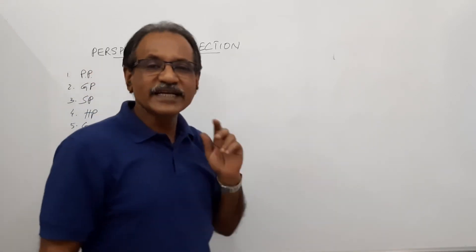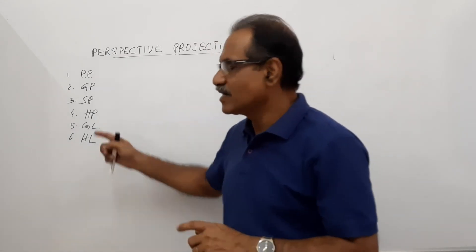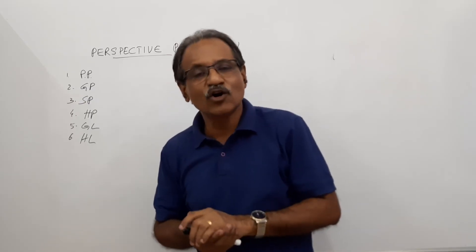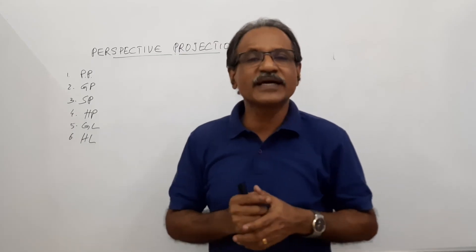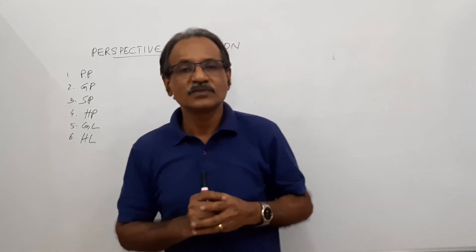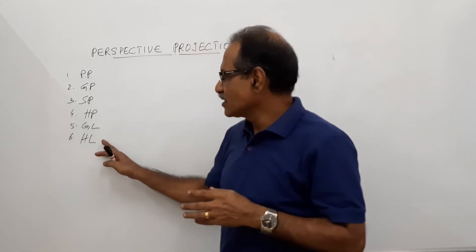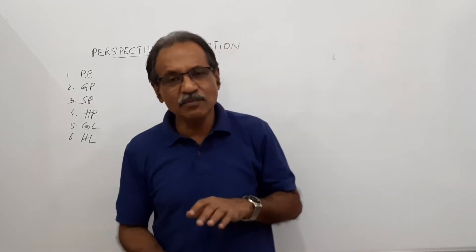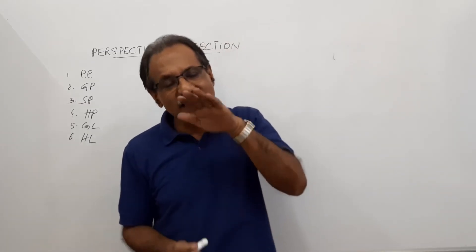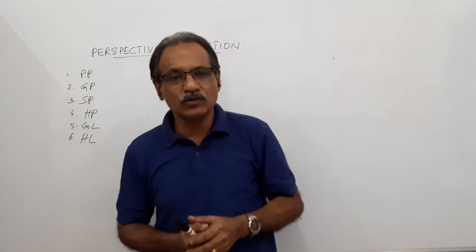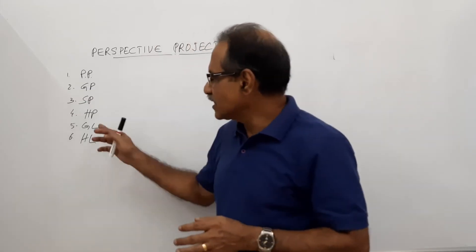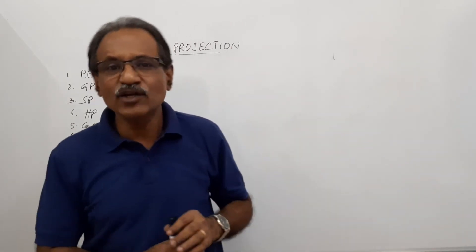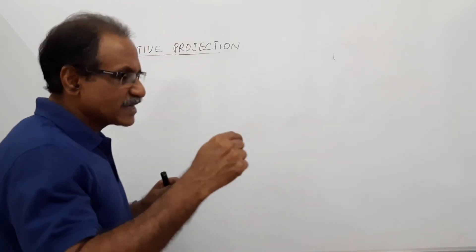The distance between the horizon line and the ground line is equal to the height of the observer, or the height of the station point from the ground. So the distance between the ground line and horizon line is nothing but the height of the station point from the ground.